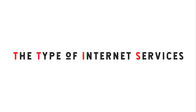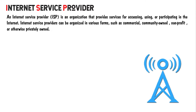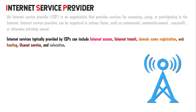Now we will discuss about types of internet services. But before going to the lesson, we have to know about internet service providers. An internet service provider is an organization that provides services for accessing, using, or participating in the internet. Internet service providers can be organized in various forms such as commercial, community owned, non-profit, or otherwise privately owned. Internet services typically provided by ISPs can include internet access, internet transit, domain name registration, web hosting, usenet service, and collocation.